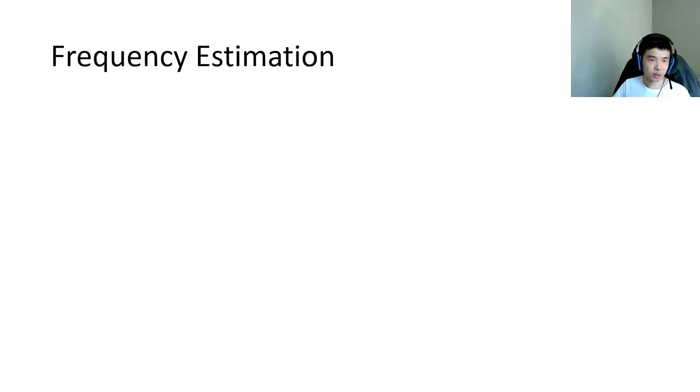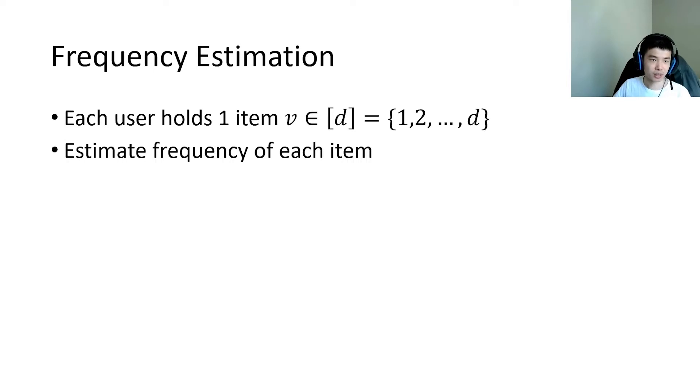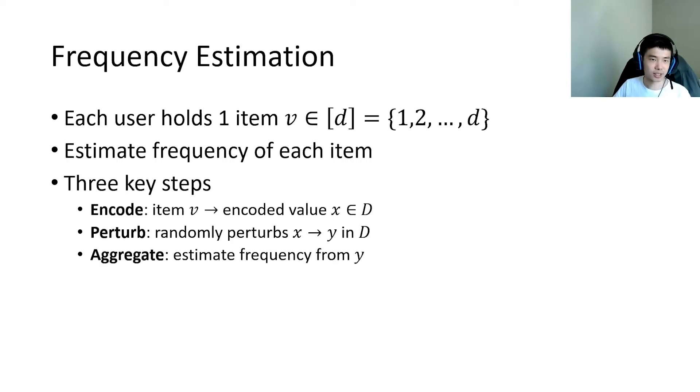In frequency estimation, we assume each user holds one item. The desired data statistics is the frequency of each item. Generally speaking, the frequency estimation protocols perform three key steps to estimate the frequency. First, the users encode the item to a value in the encoded space.